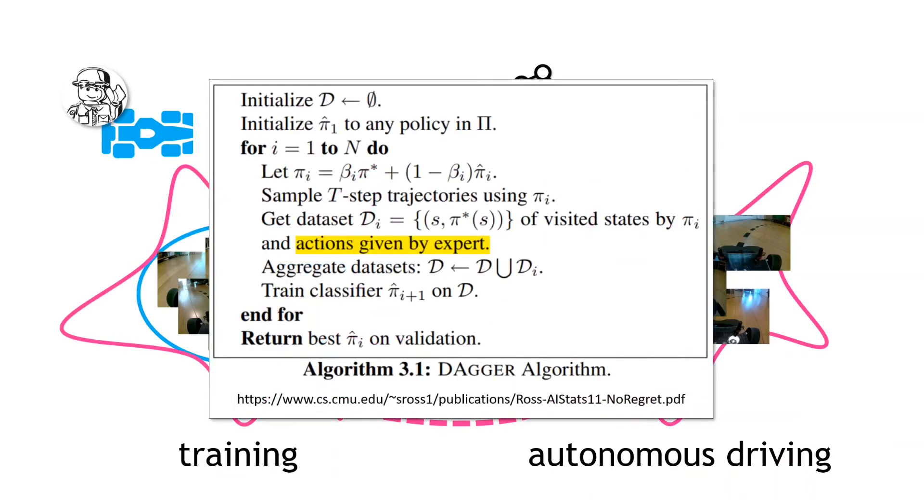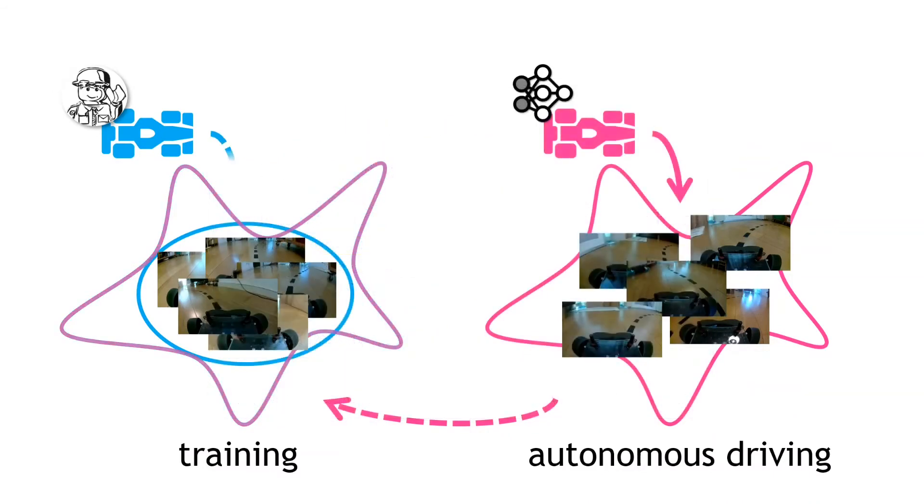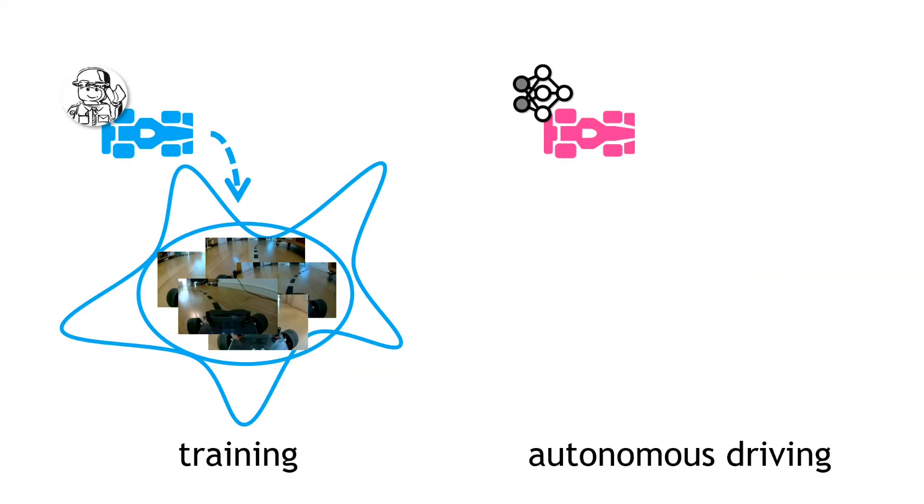According to the algorithm, we need the expert driver to update the label data for these images. So this should give us an updated set of training data, which is more representative of what the autonomous driver actually experiences. And then we go through the process again.